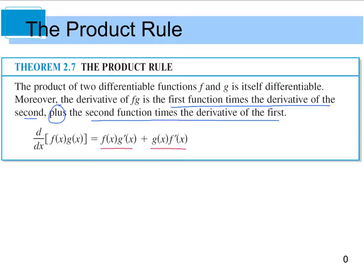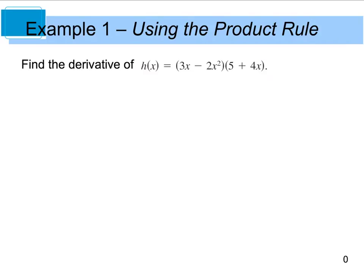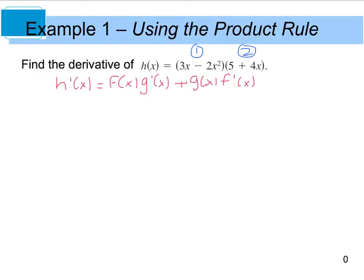In my mind, I think: first times the derivative of the second, plus the second times the derivative of the first. So with example 1, it says find the derivative of h of x, which is the product of 3x minus 2x squared, times the quantity of 5 plus 4x. So h prime of x is going to be the first, or f of x, times the derivative of the second, which is g of x, plus the second, which is g of x, times the derivative of the first. We're going to call this function 1 and function 2, or f and g.